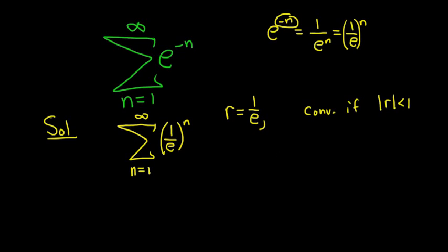So e is approximately 2.7, so 1 over e is less than 1. That's r. And if you take the absolute value of it, you get the same thing, because it's already positive.